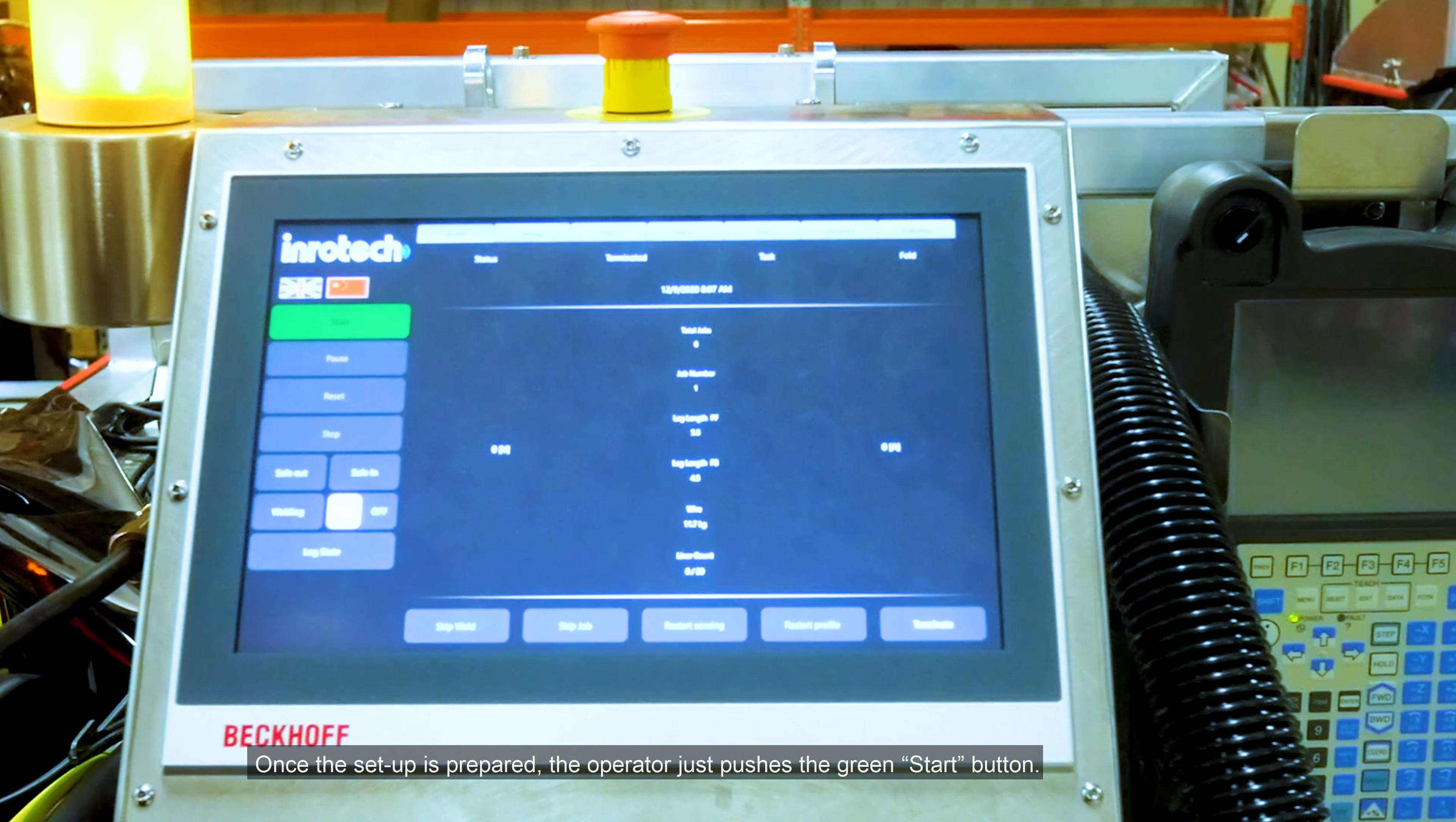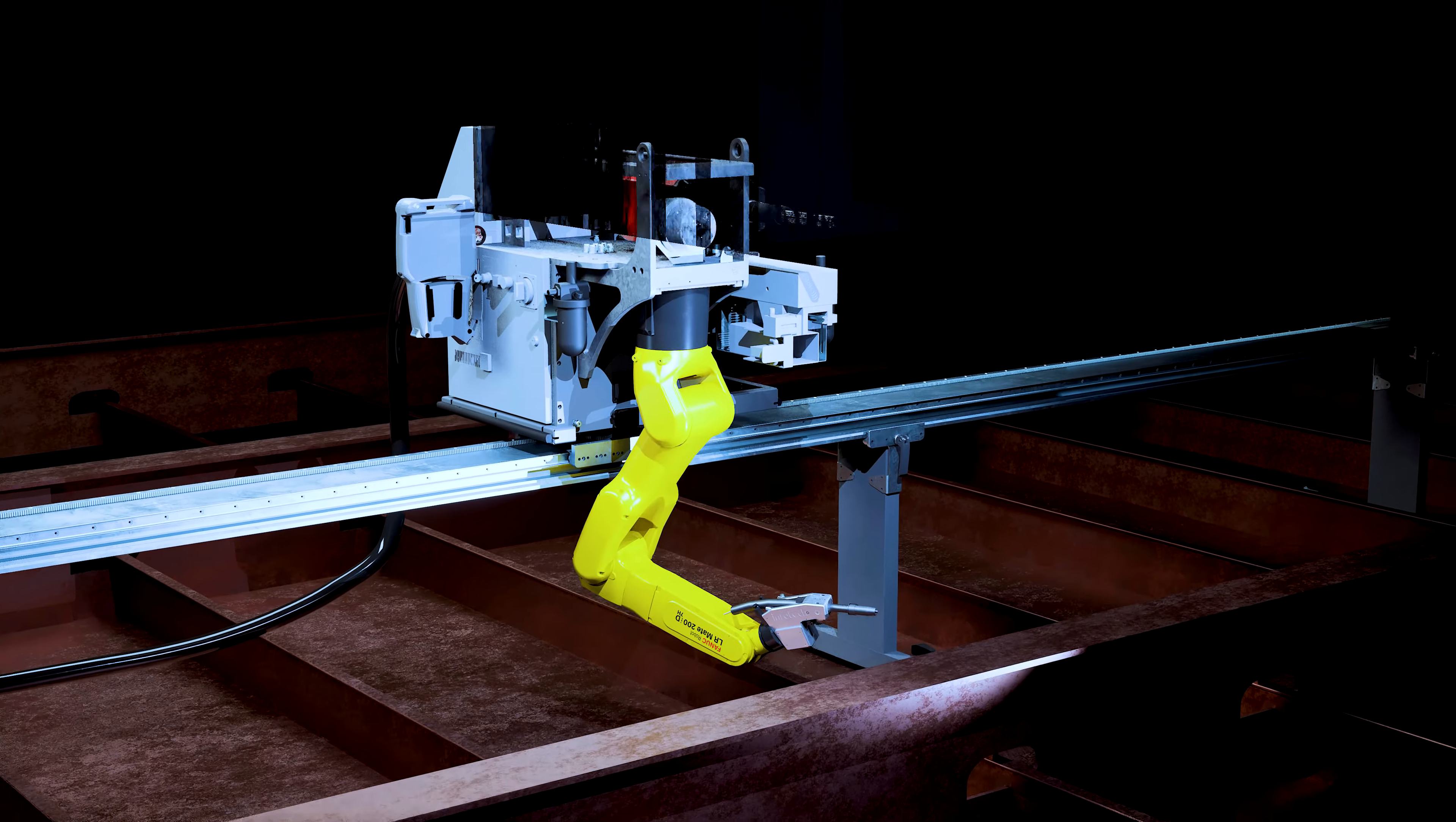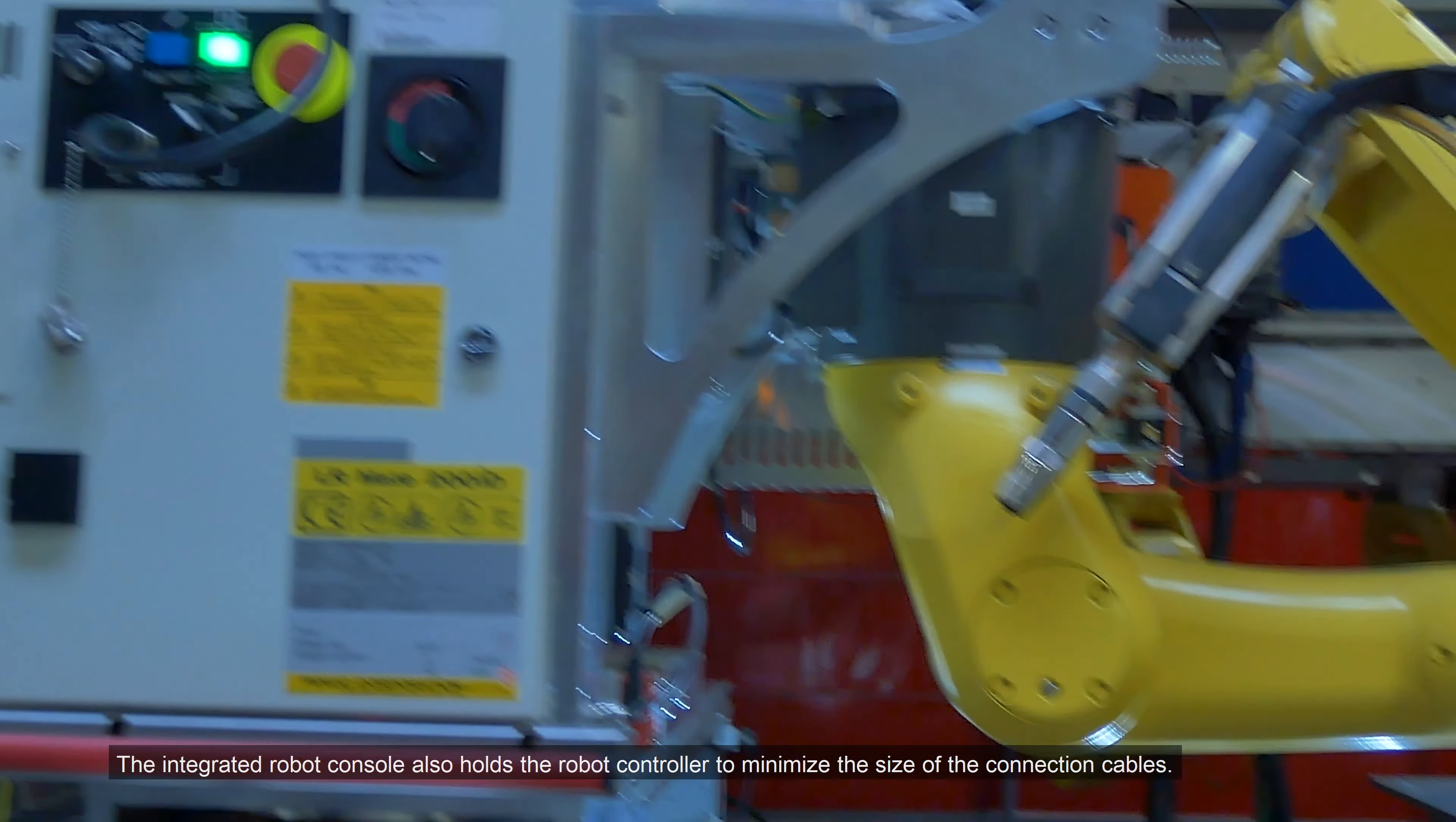Once the setup is prepared, the operator just pushes the green start button. The integrated robot console also holds the robot controller to minimize the size of the connection cables.